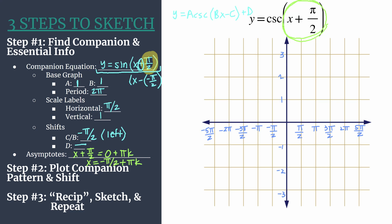Now we've done a lot of the work. We've done the analysis. We're ready for step two. We're going to plot our companion pattern and then shift. I'm going to use a light color. Be sure that you're marking lightly or using a separate color. This is not our final graph. It's just our helper to get what we need in step three.